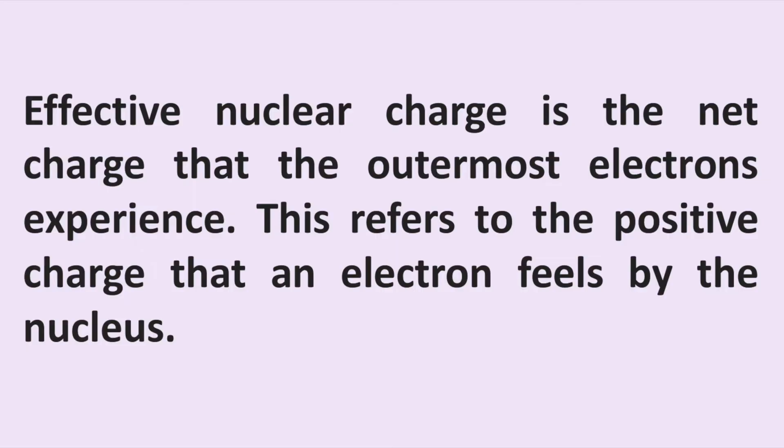In the next part of this lesson, we will be introduced to trends on the periodic table that affect radius. Before we can talk about these trends, we have to introduce an important concept called effective nuclear charge, which is the net charge that the outermost electrons experience. This refers to the positive charge that an electron feels from the nucleus.